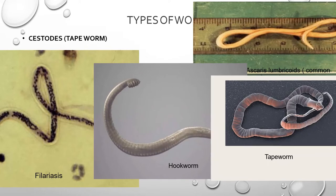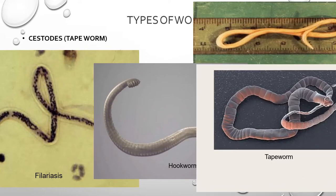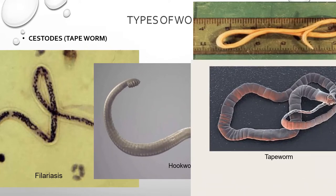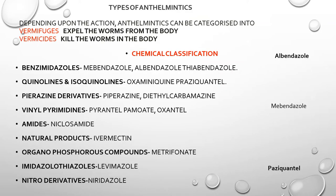The types of anthelmintics are categorized based on their action as vermifuges and vermicides. Vermifuges expel the worms from the body, while vermicides kill the worms in the body. The name itself indicates the difference: vermifuge means to expel, vermicide means to kill.